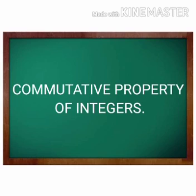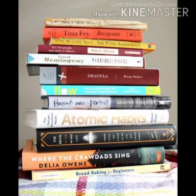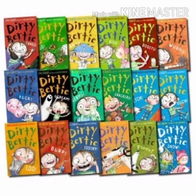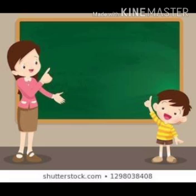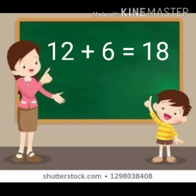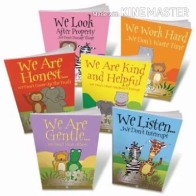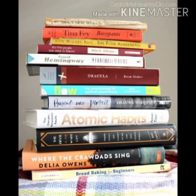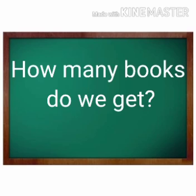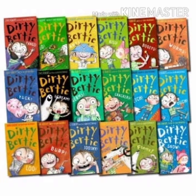Commutative property of integers. Let us move on to another property, that is commutative property. These are a set of 12 books. If we add 6 books, we get 18 books. That is 12 plus 6 is equal to 18. How many books do we get? Again, we get 18 books.